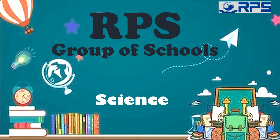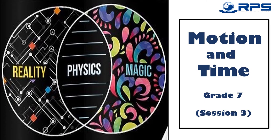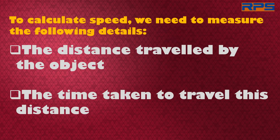Welcome to RPS Group of Schools online classes. This is session 3 for the chapter Motion and Time. In the previous sessions we discussed that in order to calculate the speed of a moving object we need to measure the distance traveled by the object and the time taken to travel this distance. In the previous class you studied the measurement of distances. Now let us learn about the measurement of time.